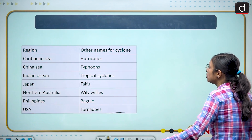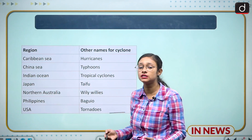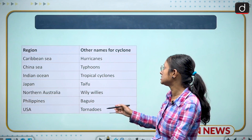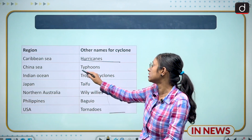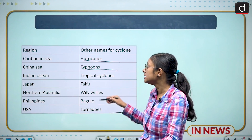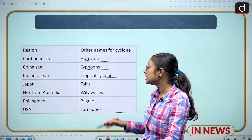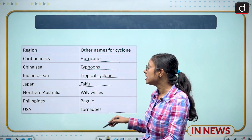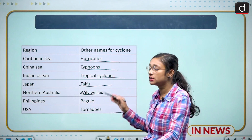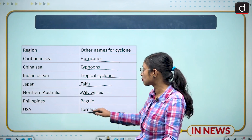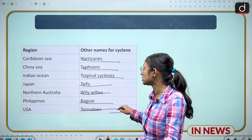Cyclones have different names in different regions. In the Caribbean Sea they are called hurricanes; in the China Sea and Japan they are called typhoons; in the Indian Ocean they are called tropical cyclones; in Northern Australia they are called willy-willies; in the Philippines they are called baguio; and in the USA they are called tornados.